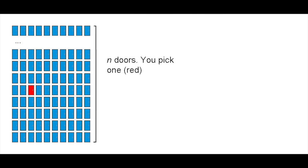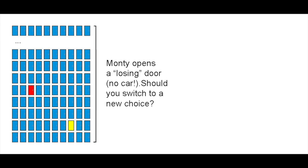In a generalization of the original problem, there are N doors. In the first step, you choose a door. Monty then opens some other door that's a loser. If you want, you may then switch your choice to another door. Monty will then open an as-yet-unopened losing door, different from your current preference. Then you may switch again, and so on. This carries on until there are only two unopened doors left.